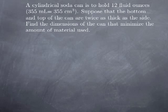Now suppose that the bottom and top of the can are twice as thick as the side. If you look at a standard soda can, this is indeed the case — the top and the bottom are quite a bit thicker than the side. We want to find the dimensions of the can that minimize the amount of material used, because what you spend on building one can essentially depends on how much material you use.